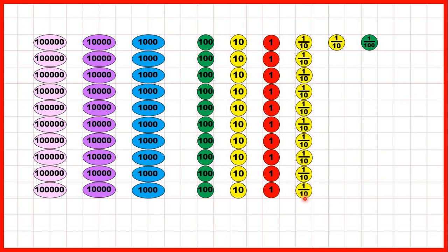So now we're getting into decimal place value. I've written one tenth on these counters, but I could also have written 0.1, because 0.1 is one tenth in decimal form.